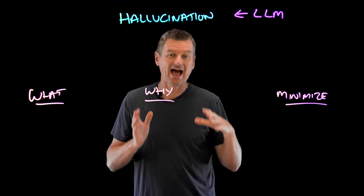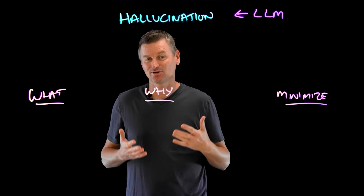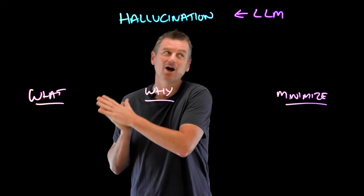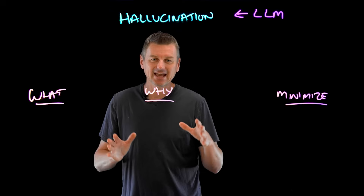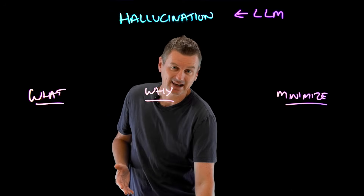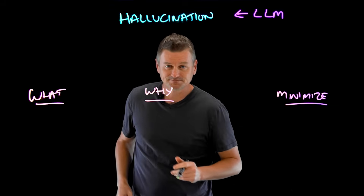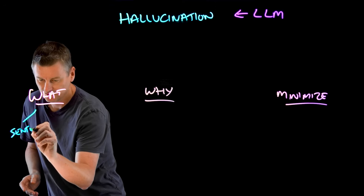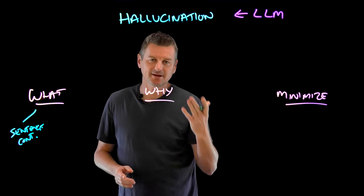Hallucinations are outputs of LLMs that deviate from facts or contextual logic, and they can range from minor inconsistencies to completely fabricated or contradictory statements. We can categorize hallucinations across different levels of granularity. At the lowest level of granularity, we could consider sentence contradiction. This is really the simplest type.